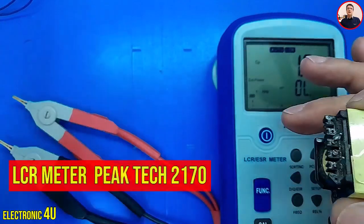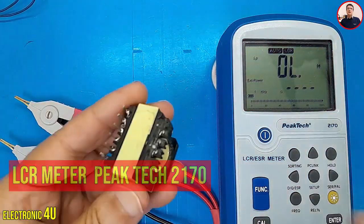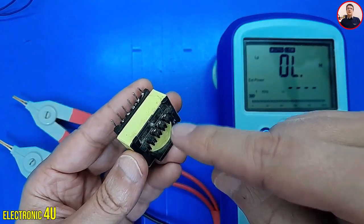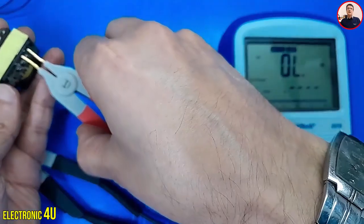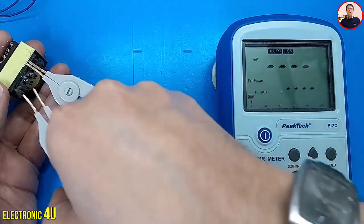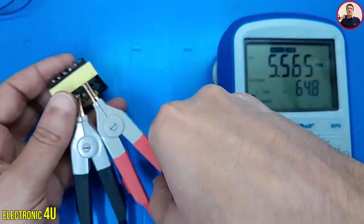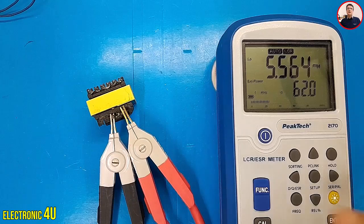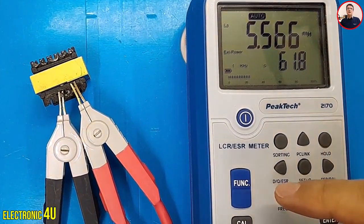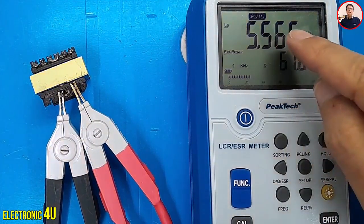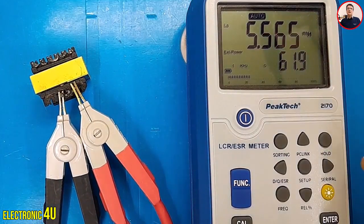Now, we will check this issue on LCR meter. I connect the device to the input winding of the transformer. I press the func button. Auto mode is activated. I select the series parameters by pressing the series button.